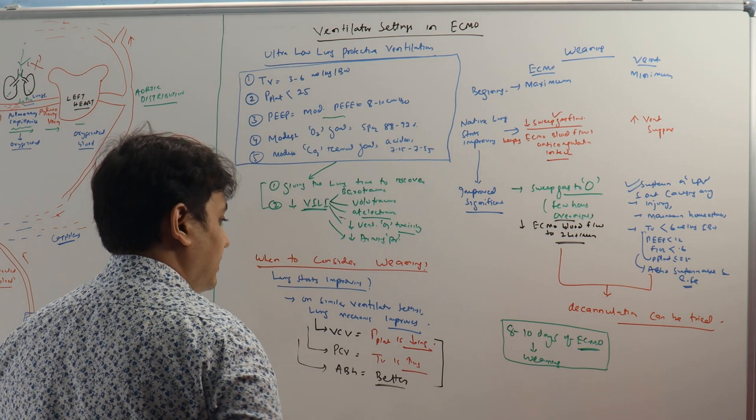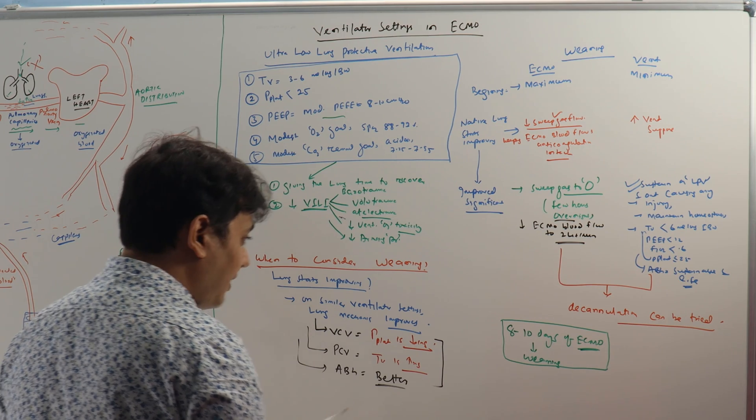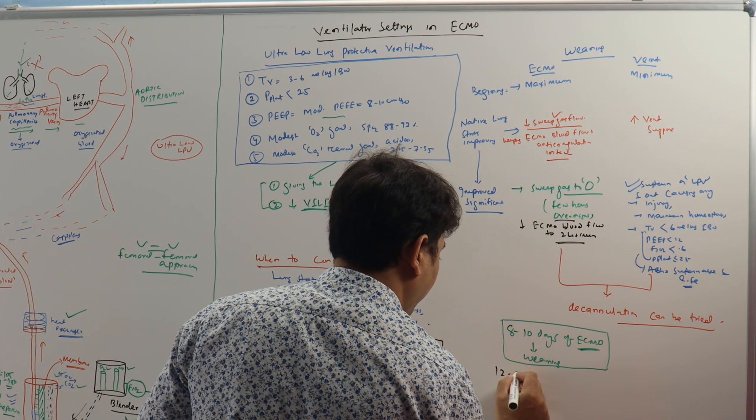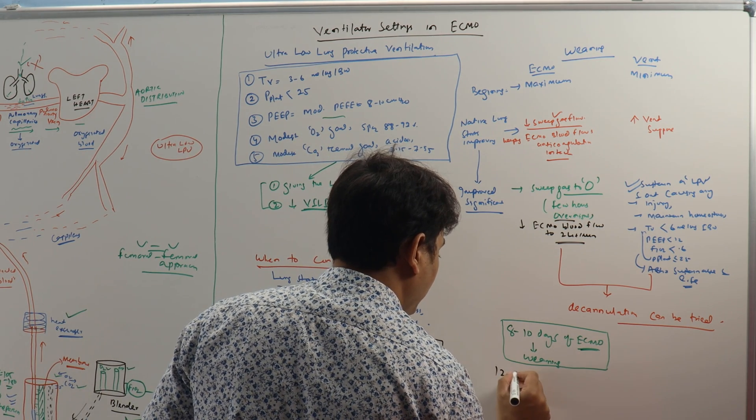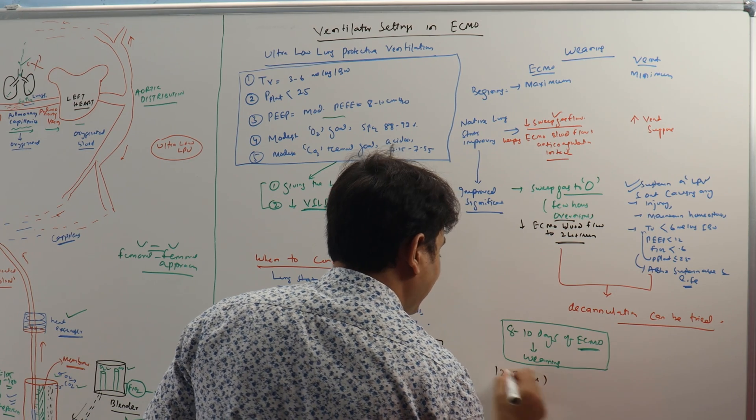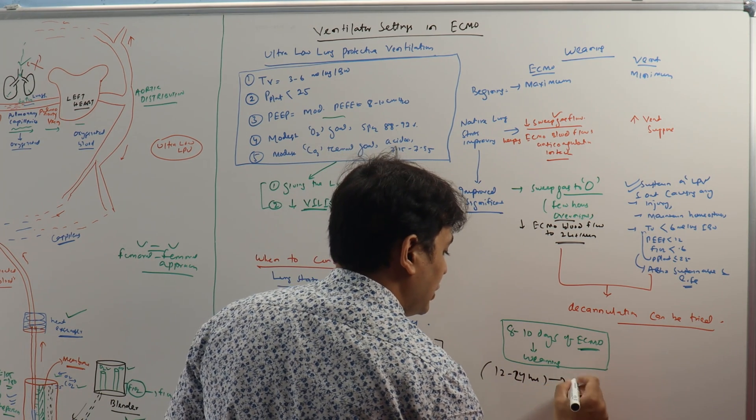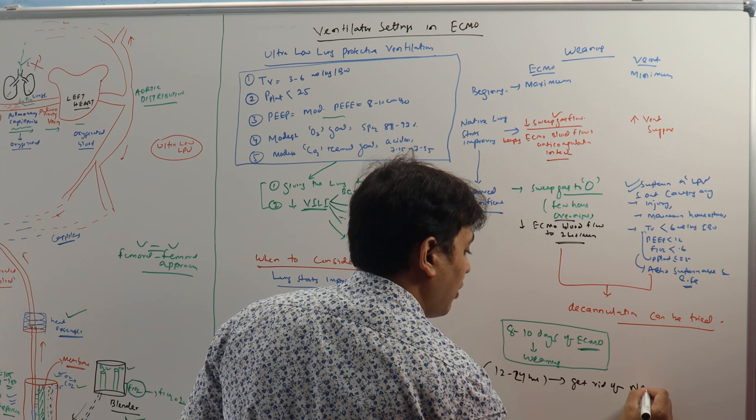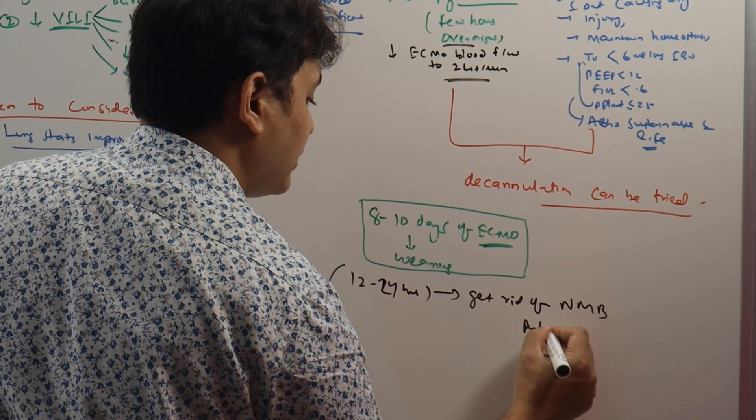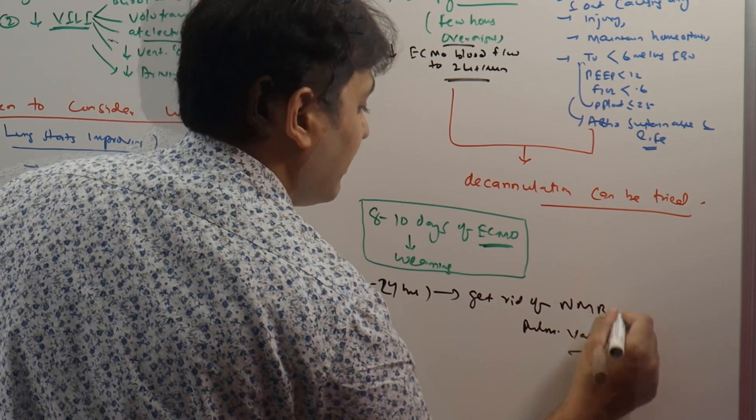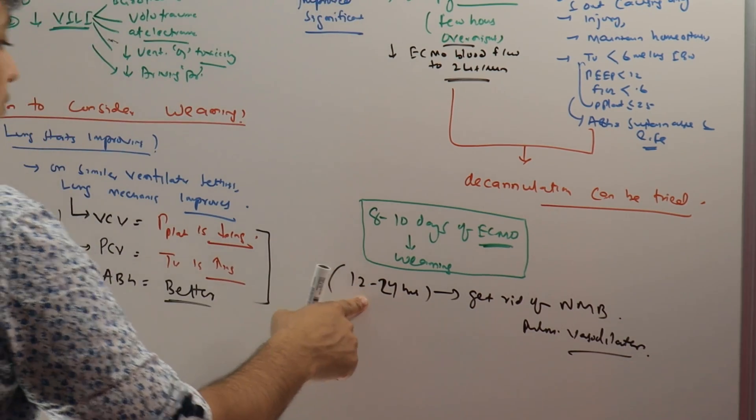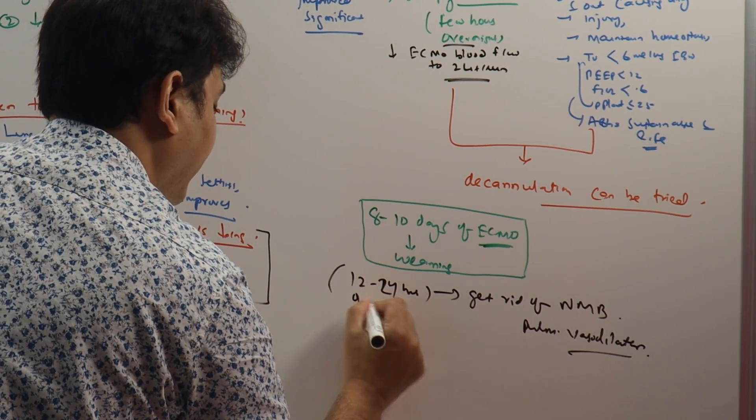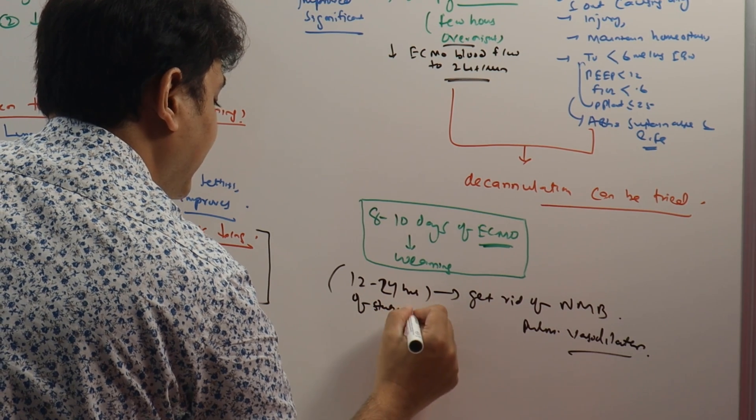But in the first 12 to 14 hours, try to get rid of neuromuscular blocker or pulmonary vasodilator if you are using. You must be able to stop it by 12 to 24 hours of starting ECMO.